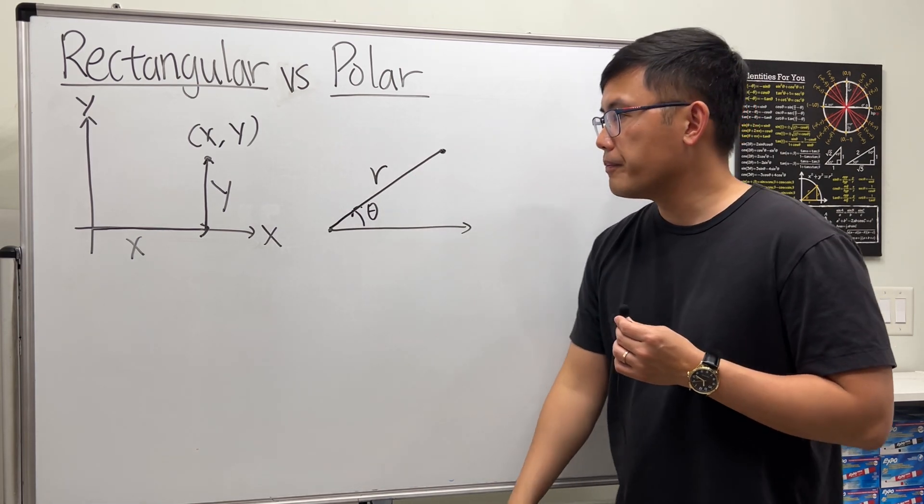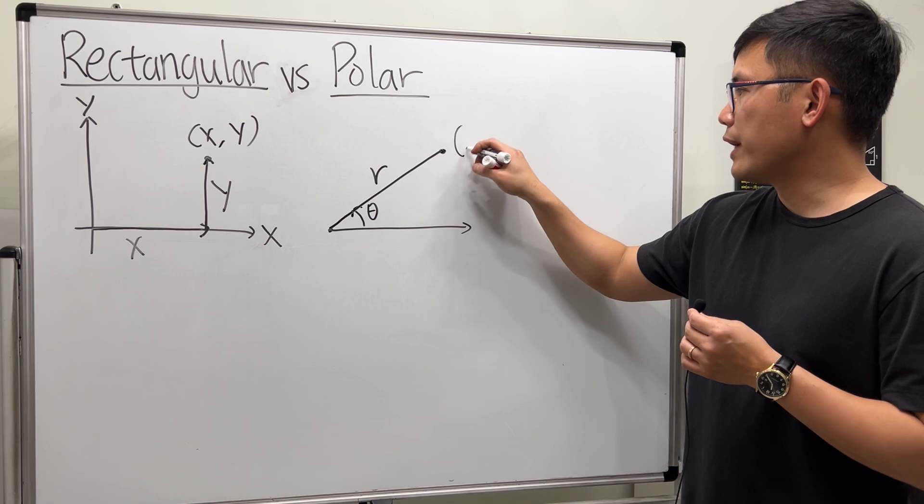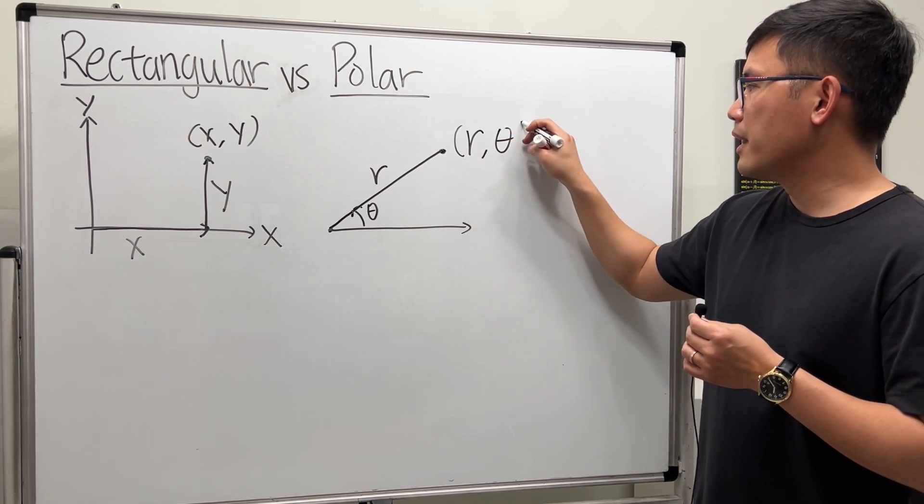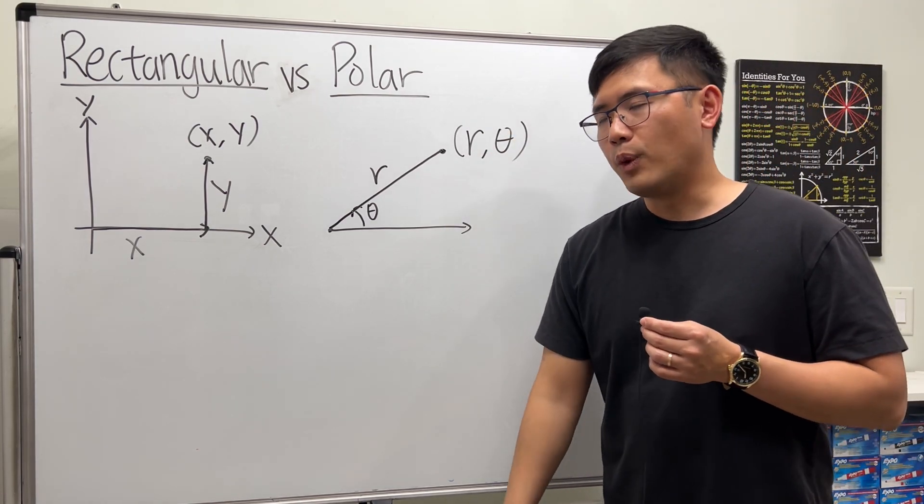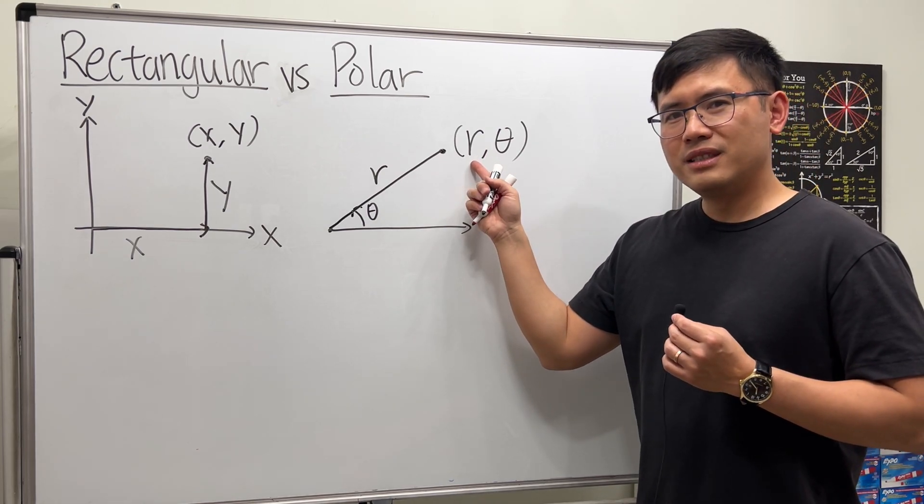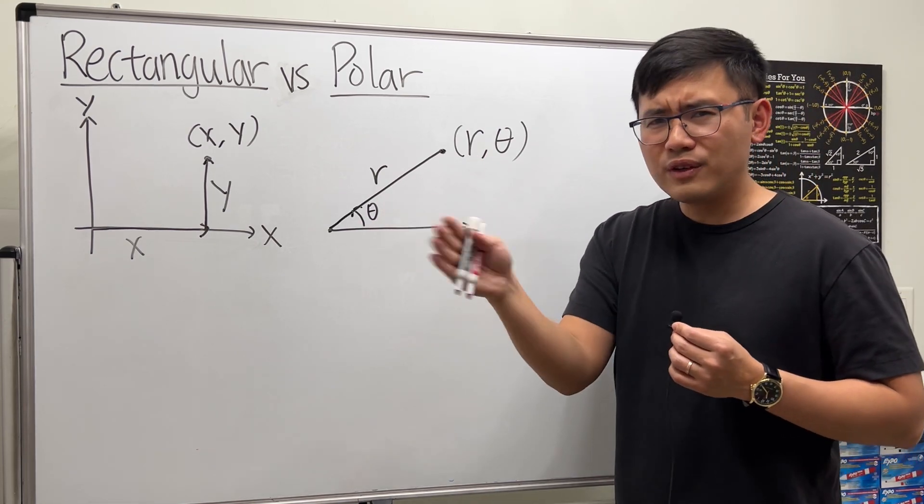So r can be negative. For this point we are going to write down r first, comma theta (r, θ). In case you're wondering why do we put r first—didn't I tell you that we should rotate first? Well, here is the idea.